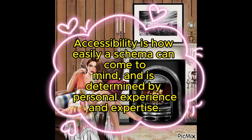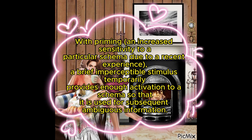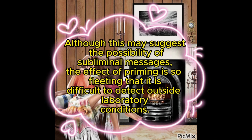Accessibility is how easily a schema can come to mind and is determined by personal experience and expertise. This can be used as a cognitive shortcut, meaning it allows the most common explanation to be chosen for new information. With priming and increased sensitivity to a particular schema due to a recent experience, a brief imperceptible stimulus temporarily provides enough activation to a schema so that it is used for subsequent ambiguous information. Although this may suggest the possibility of subliminal messages, the effect of priming is so fleeting that it is difficult to detect outside laboratory conditions.